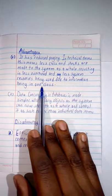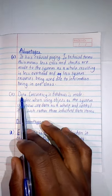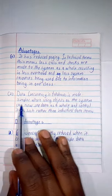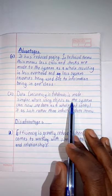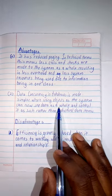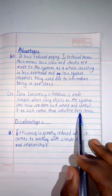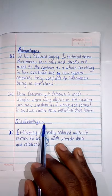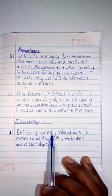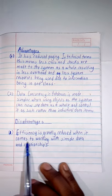We have data concurrency in databases made simpler when using objects, as the system can now see data as a whole and control it as such rather than individual data items. With the disadvantages, efficiency is greatly reduced when it comes to working with simple data and relationships.